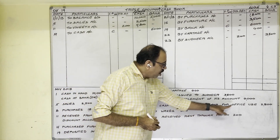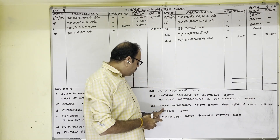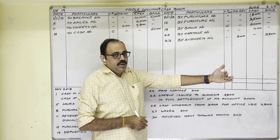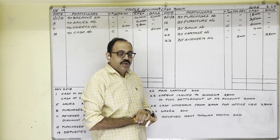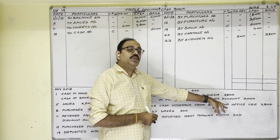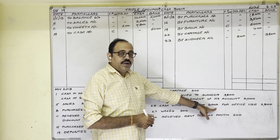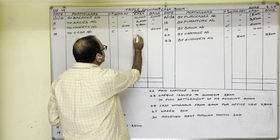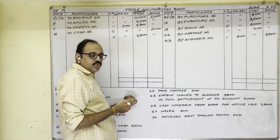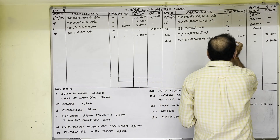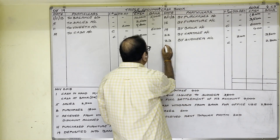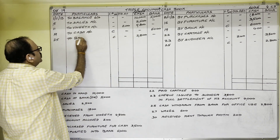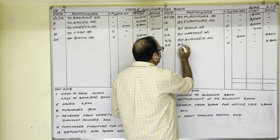25th November: Cash withdrawn from bank for office use, 2,800. Money is coming from the bank into the firm — this is a contra entry. Cash is coming in: debit side cash column, 25th date, 2,800 rupees, write 'To Bank account'. Bank balance decreases: credit side bank column, 25th date, write 'By Cash account'. Mark 'C' in the LF column for both entries.